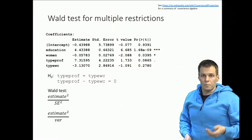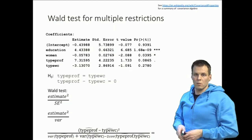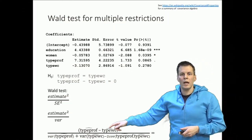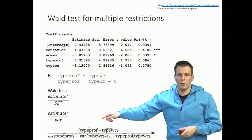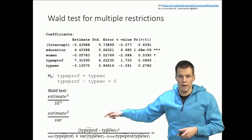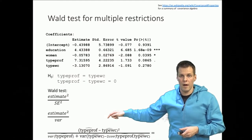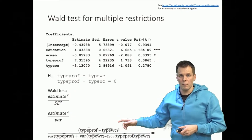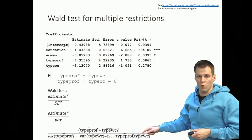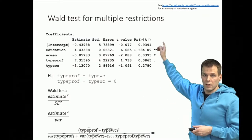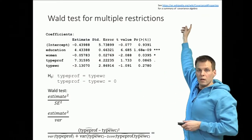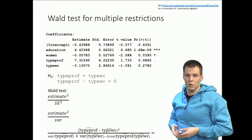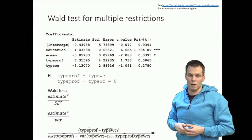But how do we calculate the variance of that estimate? We need this equation: when we have the difference between two variables — type professional and type white collar — that both vary, the variance of this difference is the variance of both variables summed, minus two times the covariance between these two variables. You can check the covariance calculation rule in the Wikipedia link provided, or your favorite regression textbook will also explain how covariances are calculated.